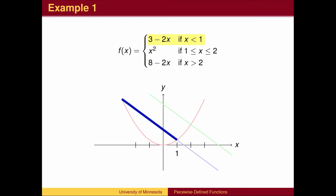The line y equals 3 minus 2x forms the part of the function when the x values are less than 1, so we don't use the entire line, we use only that portion which lies to the left of 1.